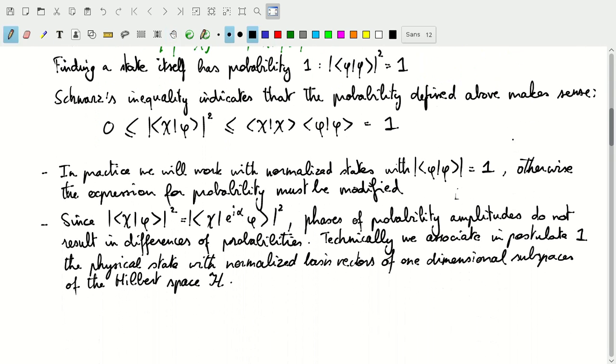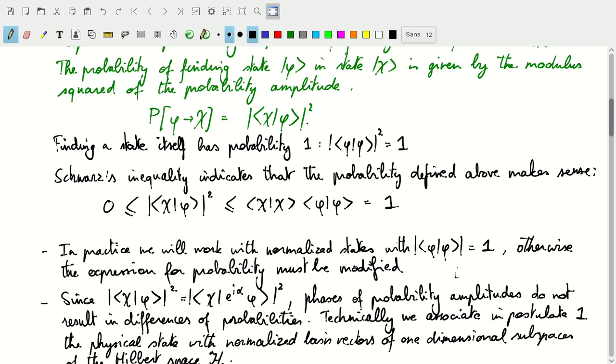In practice, we'll work with normalized states. So phi scalar product with phi, the modulus of that will be equal to one. If that's not the case, then we can modify our expression for the probability in terms of probability amplitudes by dividing by the norm of phi and chi. But instead we'll work with normalized states.